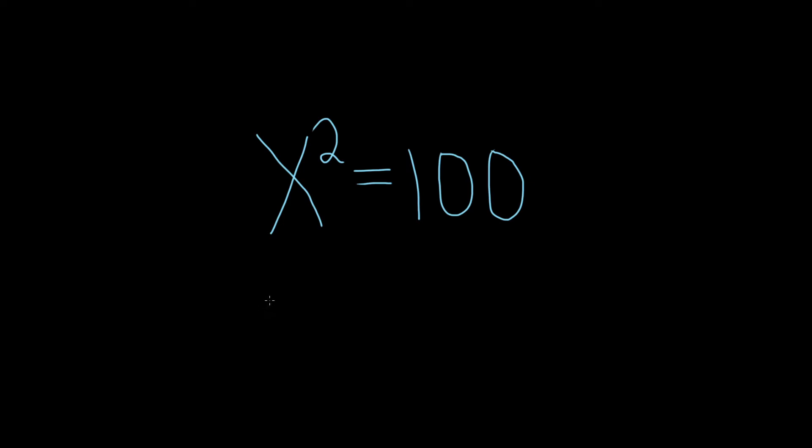Solve the equation by using the square root property. So the square root property says that when you have something squared and it's equal to a number, in order to solve this, you simply take the square root of both sides.